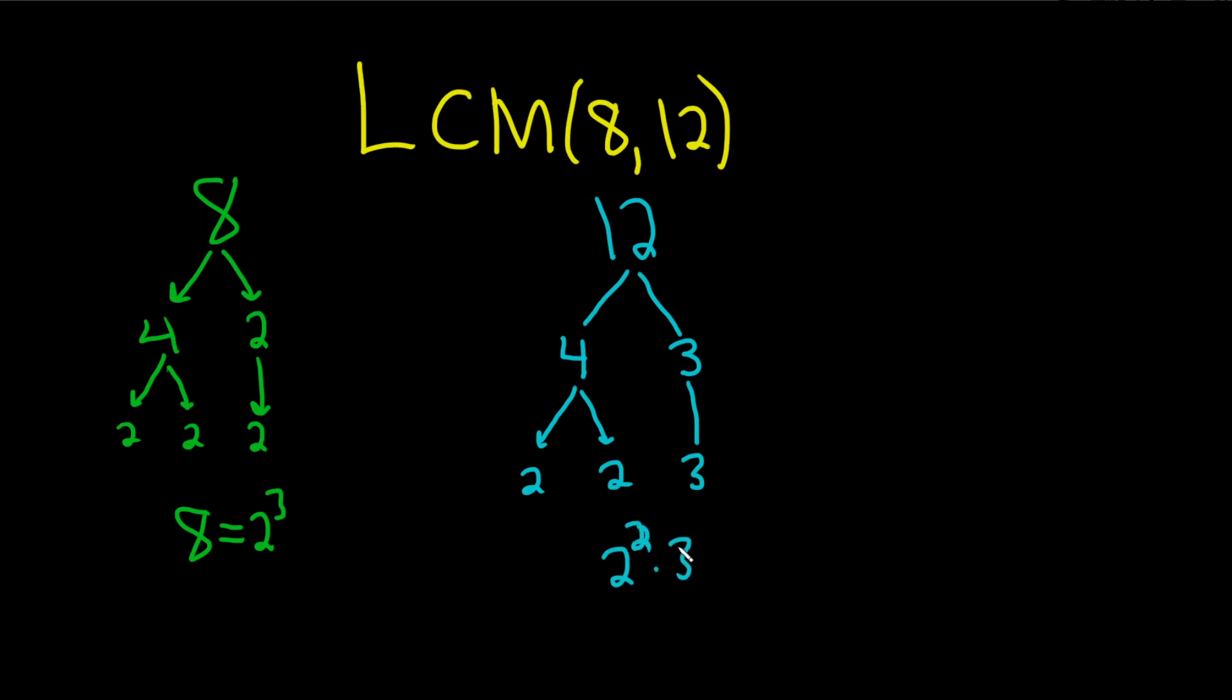And now what you do is you look at each prime number and you take the biggest prime power. So for example, let's start with 2. Here's 2 cubed and here's 2 squared. So you take this one because it's bigger. So 2 cubed. And then 3 is only one 3, so you've got to take it.